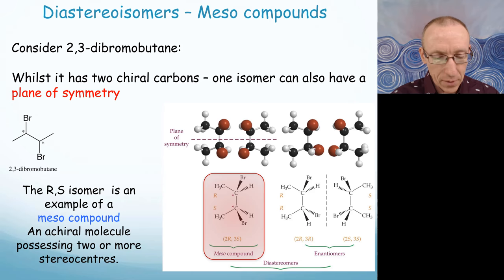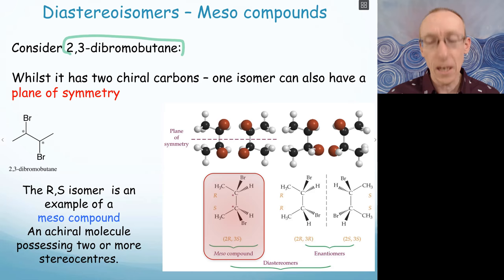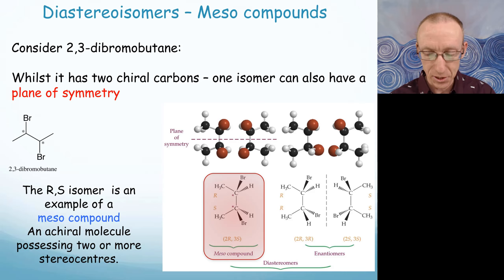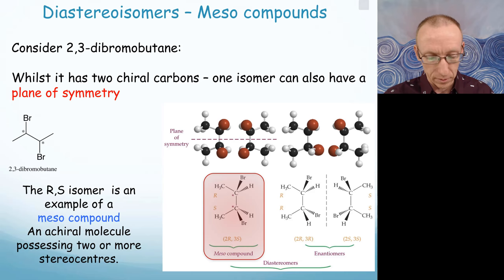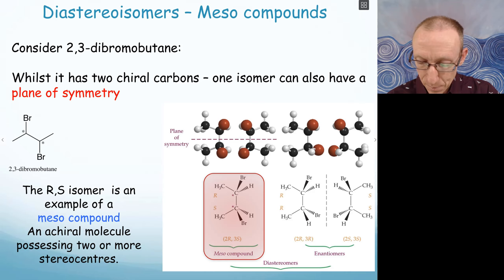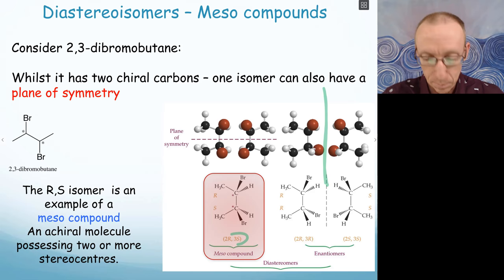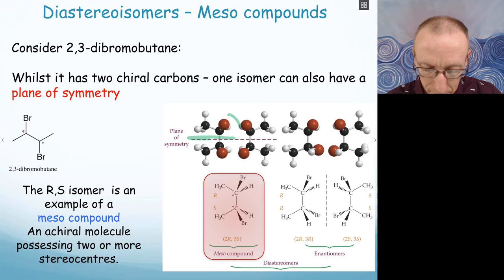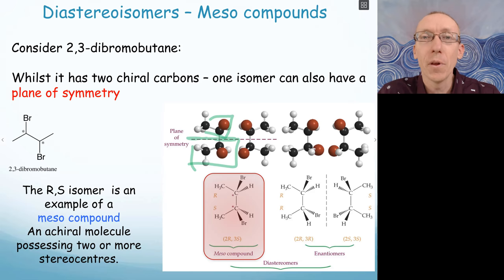When we talk about diastereomers, we can also have meso compounds. If we have 2,3-dibromobutane, it has two chiral carbons. However, only one of those isomers can actually have non-superimposable mirror images, because one of those isomers has a plane of symmetry, and compounds with a plane of symmetry cannot be chiral. Looking at the possible isomers, there's 2R3R and 2S3S which are enantiomers of each other. But the 2R3S molecule has a plane of symmetry — one half of the molecule reflects the other half — and therefore the molecule is achiral.